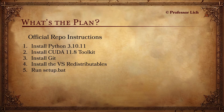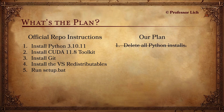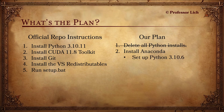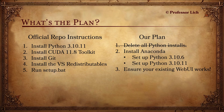So what's the plan? First of all, I've deleted my Python installs — both 3.10.6 and 3.10.11 — so I have literally nothing installed. Then I've installed something called Anaconda. From there, I've set up Python 3.10.6 and 3.10.11. And then, of course, made sure that my web UIs work, because all of this is pointless if we can't run Stable Diffusion anymore.